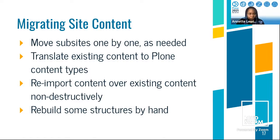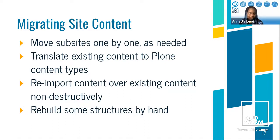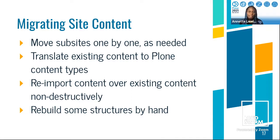The challenge with content migration was that we weren't moving everything at one shot — we needed to pull pieces and they were changing. We couldn't just pull one export and pick up a piece. We needed to move the subsites one by one as needed. So we ended up modifying some of the migration code so we could target specific areas and folders of the site and just export that. We also had pipelines to translate the content, images, and everything into new Plone content types. One of the really cool things we did was allow reimporting content over existing content non-destructively, so if we had to redo all the images, we could just delete the current images in staging and reimport that content.